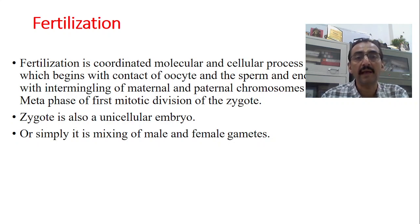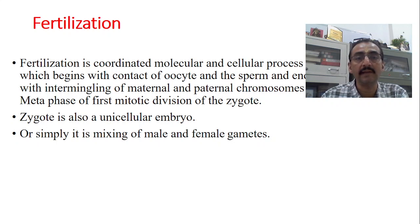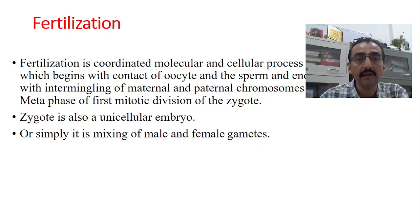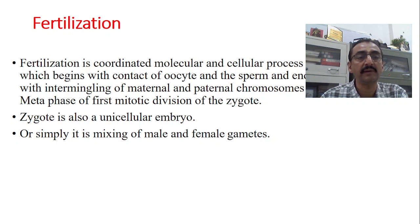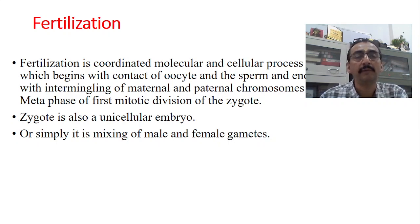When does fertilization begin? It begins as soon as the sperm touches the oocyte inside the female genital tract. And this process ends with the intermingling of maternal and paternal chromosomes — at the metaphase of the first mitotic division of the zygote. So in the zygote, at metaphase of the first mitotic division, this particular process comes to an end and we call it fertilization.